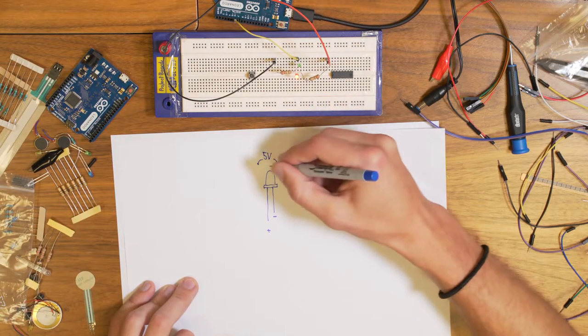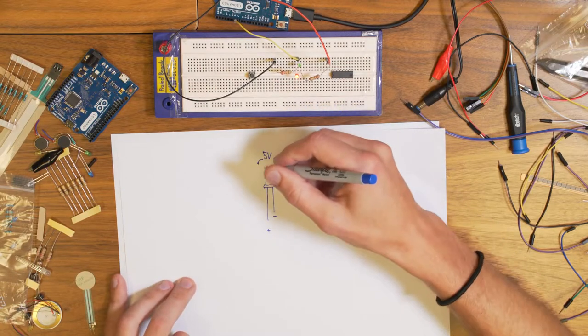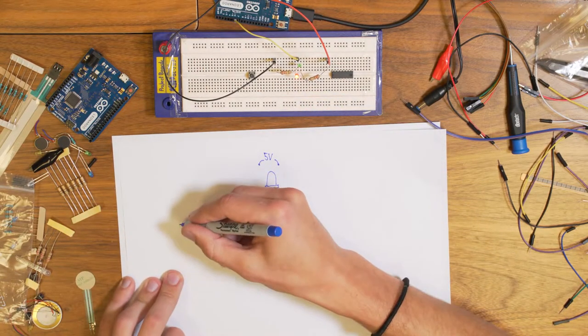So we want to have five volts over here applied. So the blink example has an output pin.